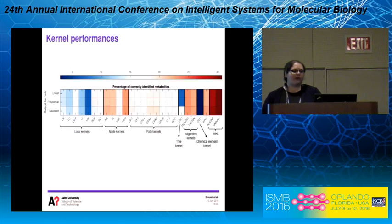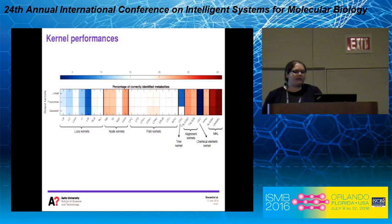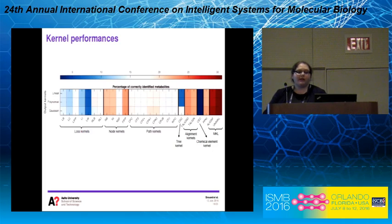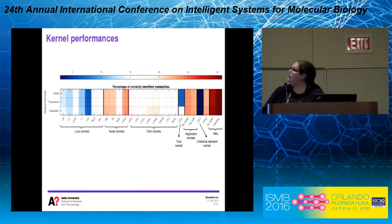The heatmap shows the results for the IOKR method across all input and output kernel combinations — specifically, the percentage of correctly identified metabolites at rank 1. Rows correspond to the 3 output kernels and columns to the input kernels. The best-performing single kernels are the node-based kernels, the alignment-based kernels, and the probability product kernel. Both multiple kernel learning approaches substantially increase performance compared to any single kernel. Surprisingly, the simpler Uniform MKL approach performs slightly better than AlignF. Regarding output kernels, differences are small but using a Gaussian kernel is generally slightly better.